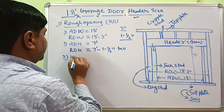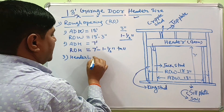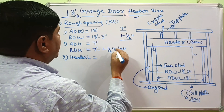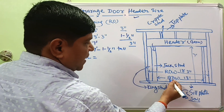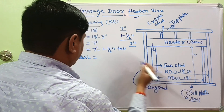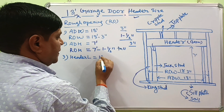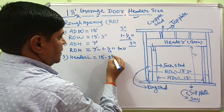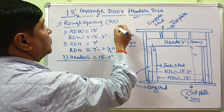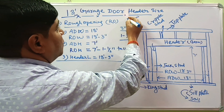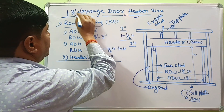The header length is generally about 9 inches longer than the actual door width. So the header length will be 18 feet 9 inches for an 18-foot garage door.